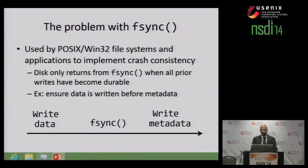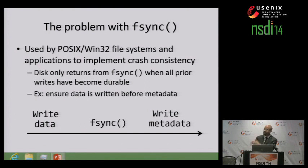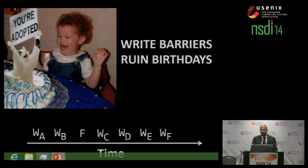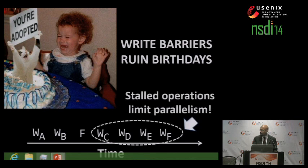We still need to deal with the issue of fsyncs. Fsyncs are used by POSIX and Win32 applications to implement crash consistency. When an application makes an fsync call, the disk only returns from the call when all prior writes have become durable. A common example is a journaling file system: the file system writes data blocks, issues an fsync, and metadata is only written when that flush completes. Unfortunately, write barriers constrain write parallelism and thus performance. The application sends writes to blocks A and B and does a flush, but latter operations cannot issue until that flush completes.